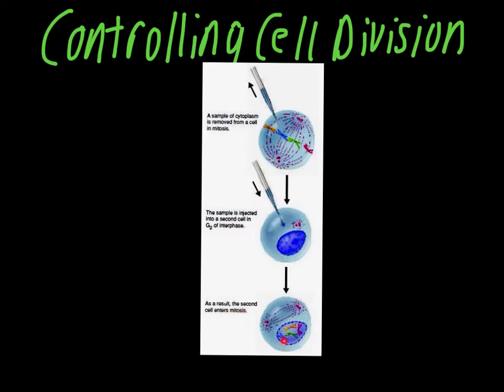And hopefully down here you recognize all of the signs of prophase beginning in that cell. So what this showed scientists is that there were proteins in the cytoplasm that were controlling the steps of cell division. Once they went through a few experiments, they were able to isolate the individual proteins.